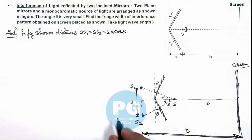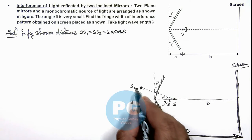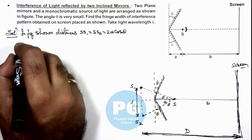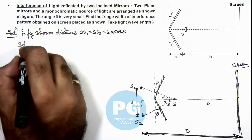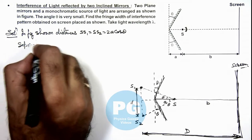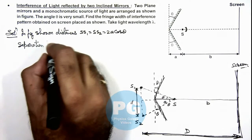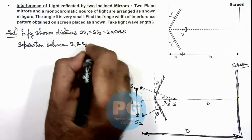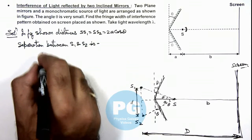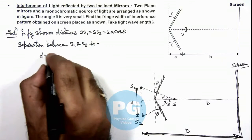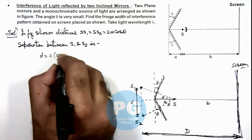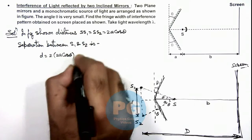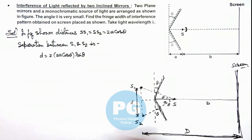Now in this situation if we wish to calculate the value of d, then we can calculate the separation between S1 and S2. This separation we can write as 4a cos theta, which is twice of 2a cos theta multiplied by sine theta. As this is 2a cos theta, so half of distance is 2a cos theta sine theta.